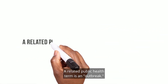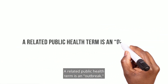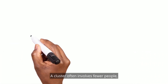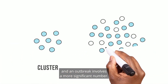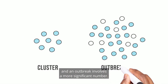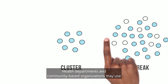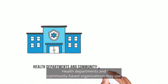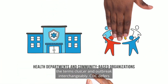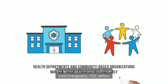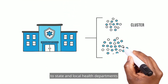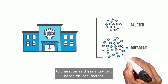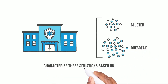A related public health term is an outbreak. A cluster often involves fewer people, and an outbreak involves a more significant number. Health departments and community-based organizations may use the terms cluster and outbreak interchangeably. CDC defers to state and local health departments to characterize these situations based on local factors.